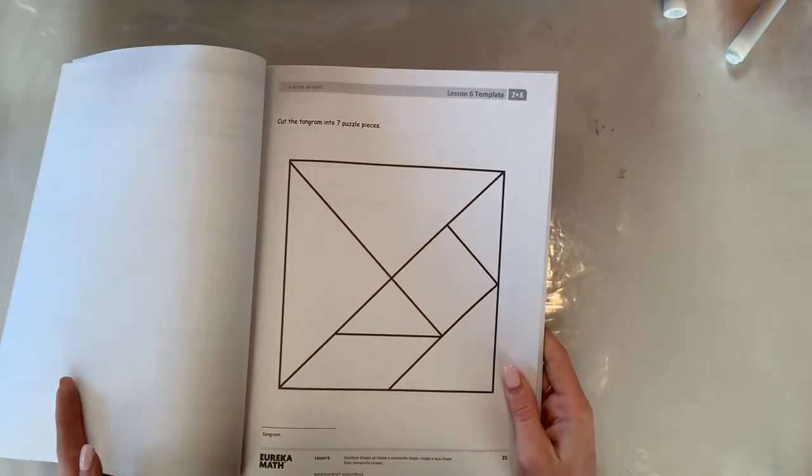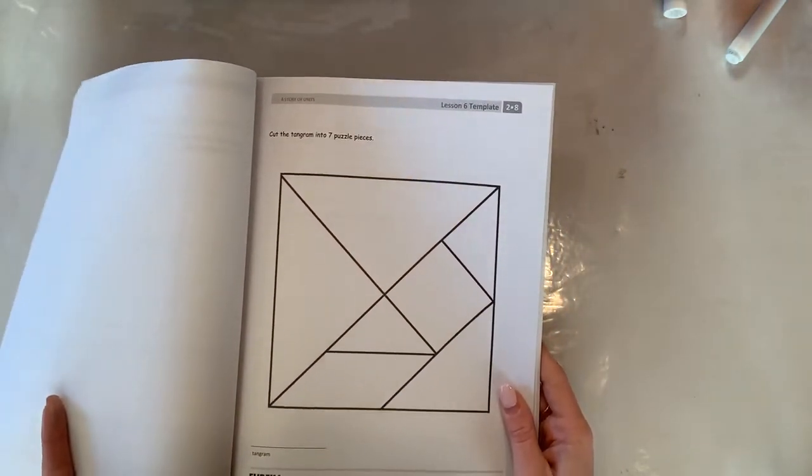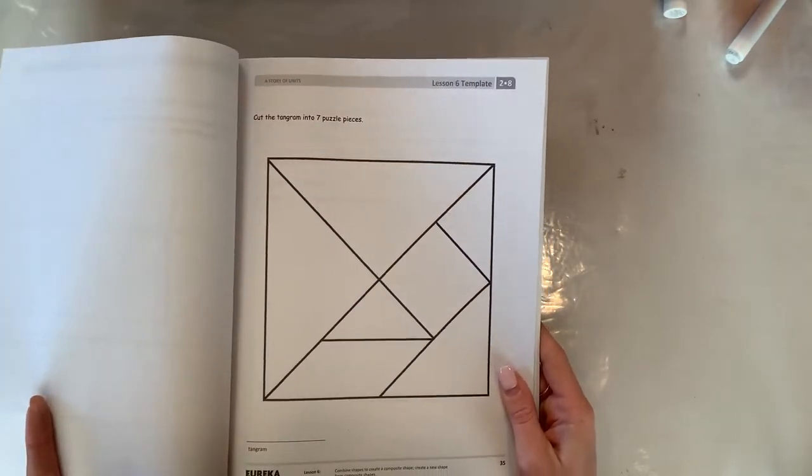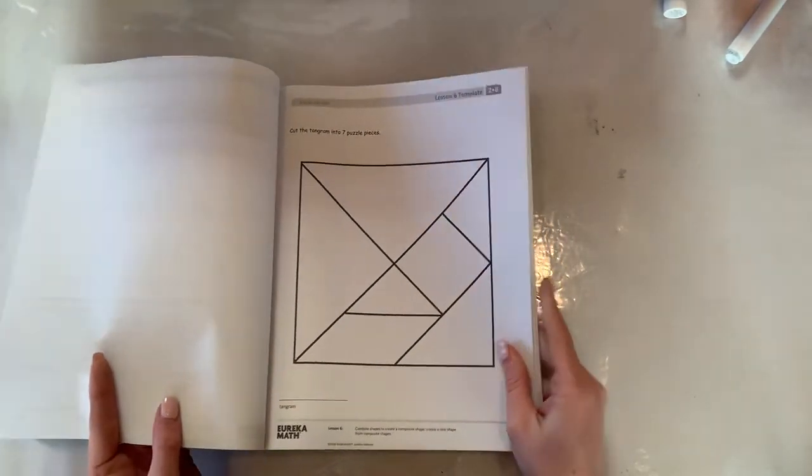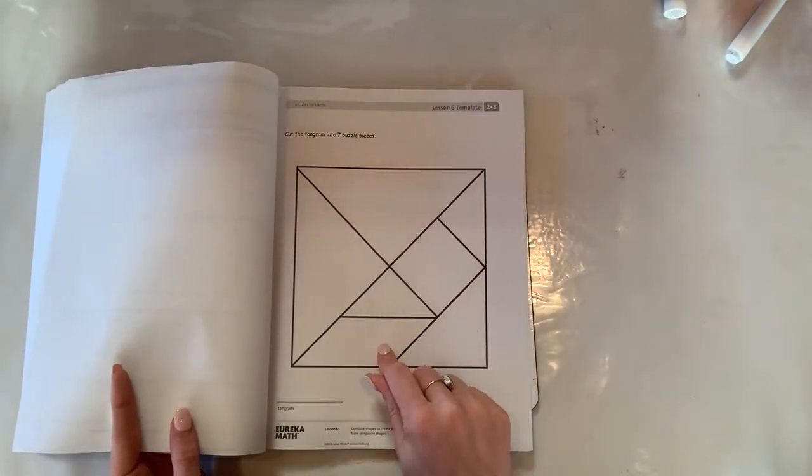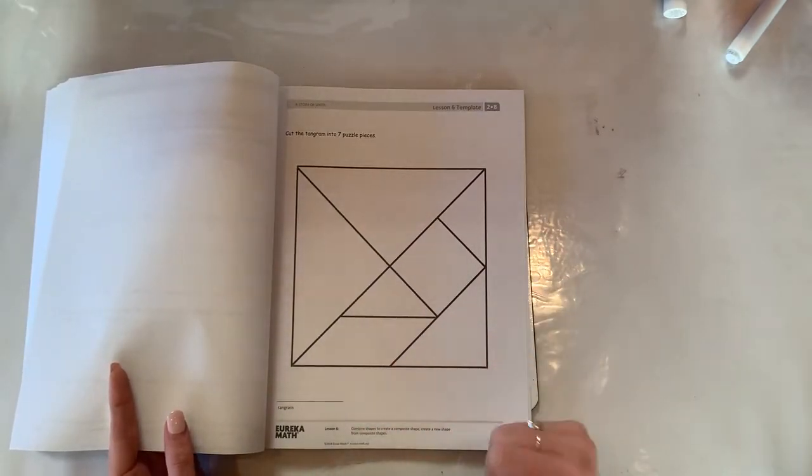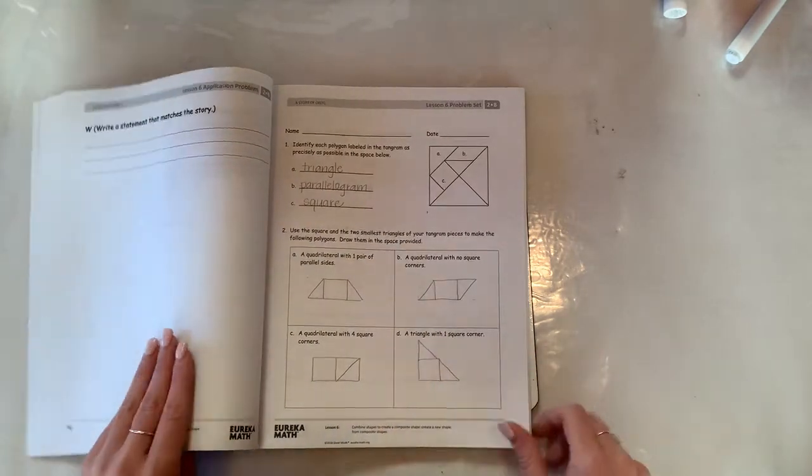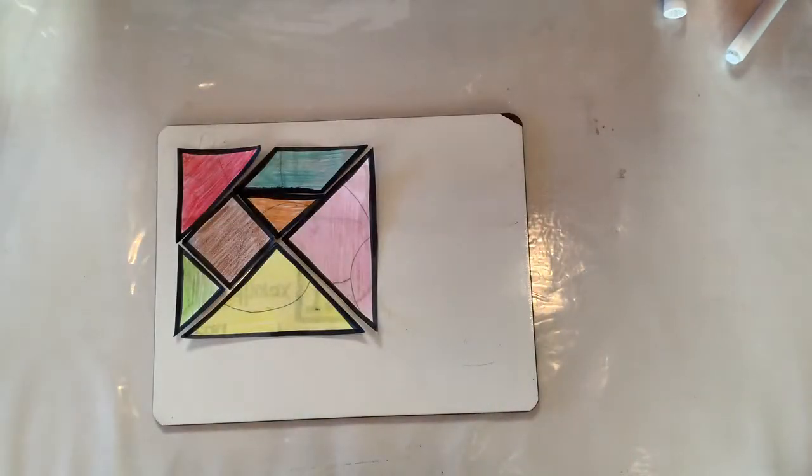You're going to see a page like this and it says cut this puzzle piece into seven pieces. So what I want you to do first is I want you to pause this video, cut this out, and color it. And once you're done then unpause and then we'll go back to finish this page together.